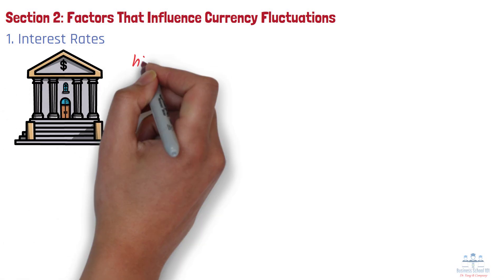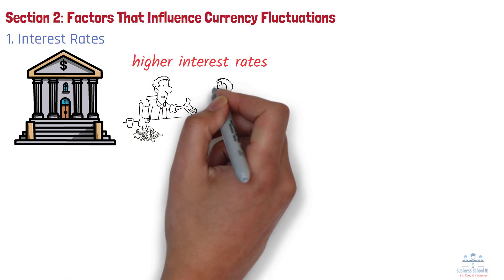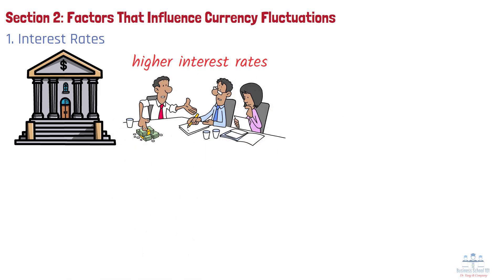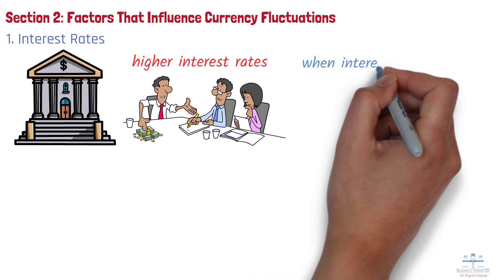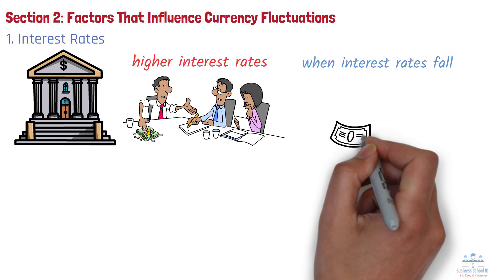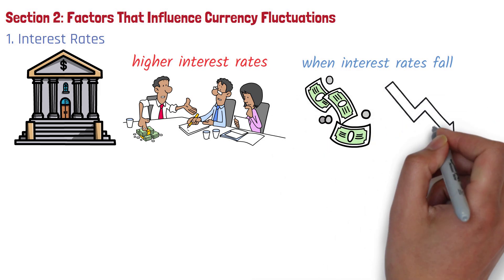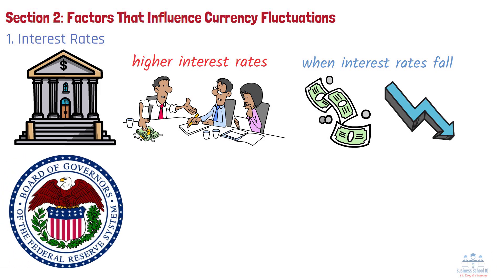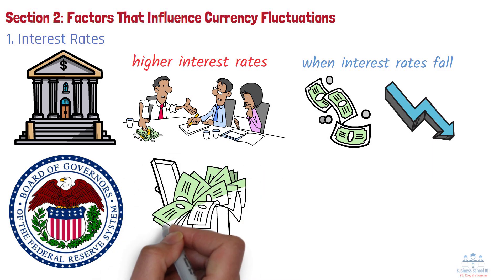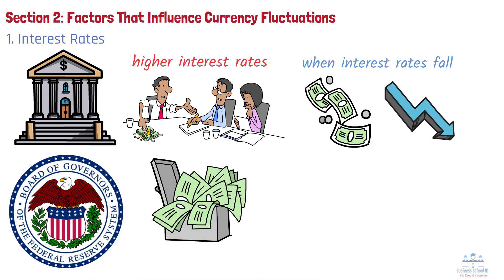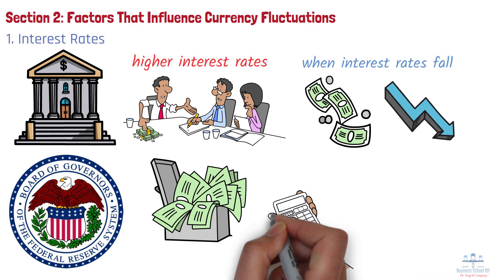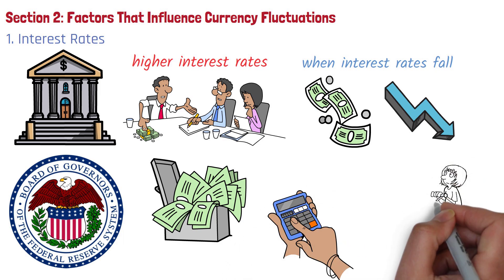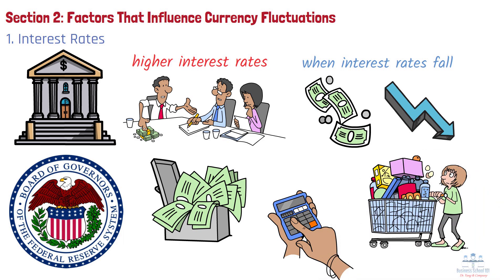When a country offers higher interest rates, it attracts foreign investment because investors can earn better returns. This creates more demand for the currency, driving up its value. Conversely, when interest rates fall, there is less incentive for foreign investors to hold that currency, which weakens its value. For example, if the US Federal Reserve raises interest rates, foreign investors see this as an opportunity to earn more on their investments in the US, so they buy more US dollars, increasing demand. As a result, the US dollar strengthens against other currencies, making US goods more expensive abroad but imports cheaper for American consumers.